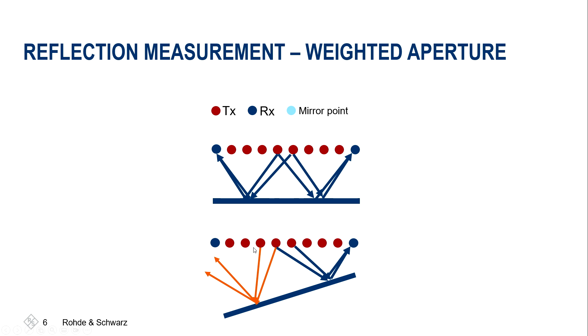Now if we tilt the sample by too much, the incident angle equals the reflection angle with the standard reflectors we are using. That means the energy is being reflected to an area where there is actually no receive antenna. So if we just look at the result, we could think that sample is pretty good — but actually we have just tilted it too much and the measurement we are getting is not correct.